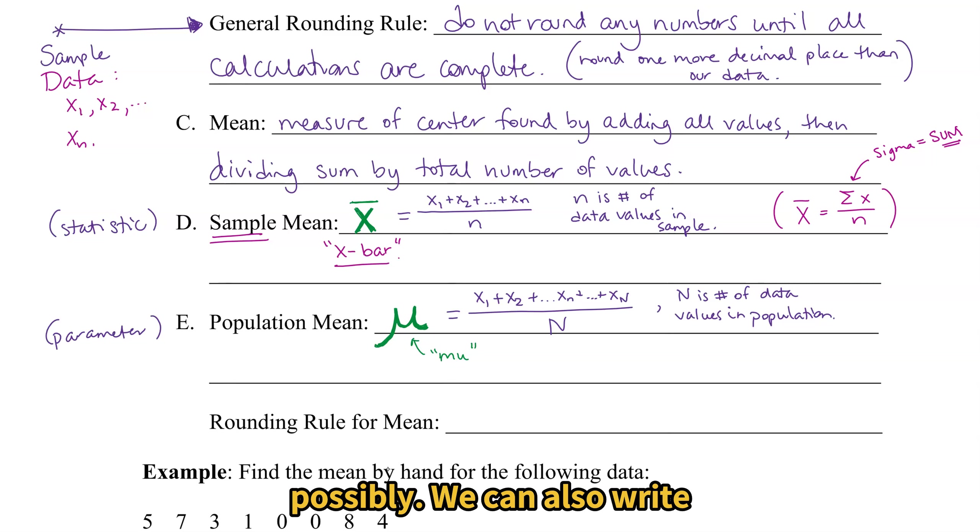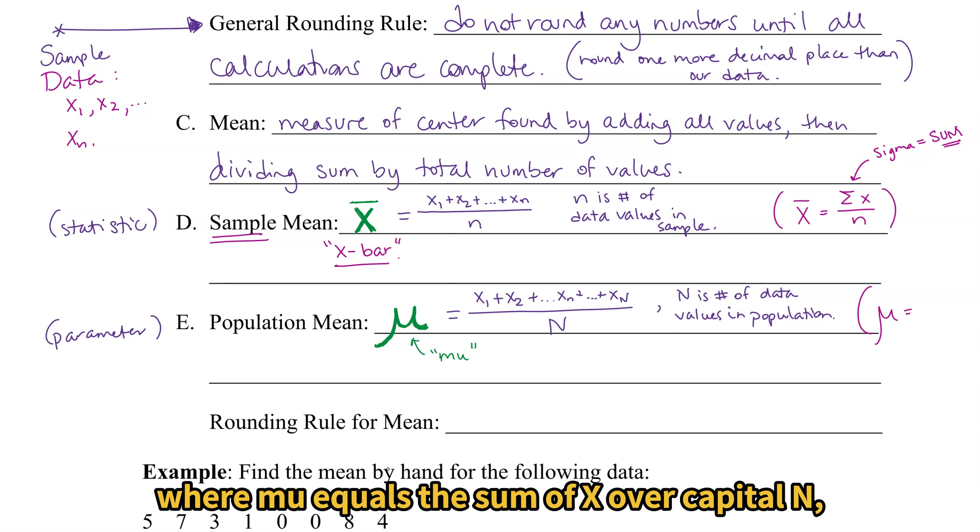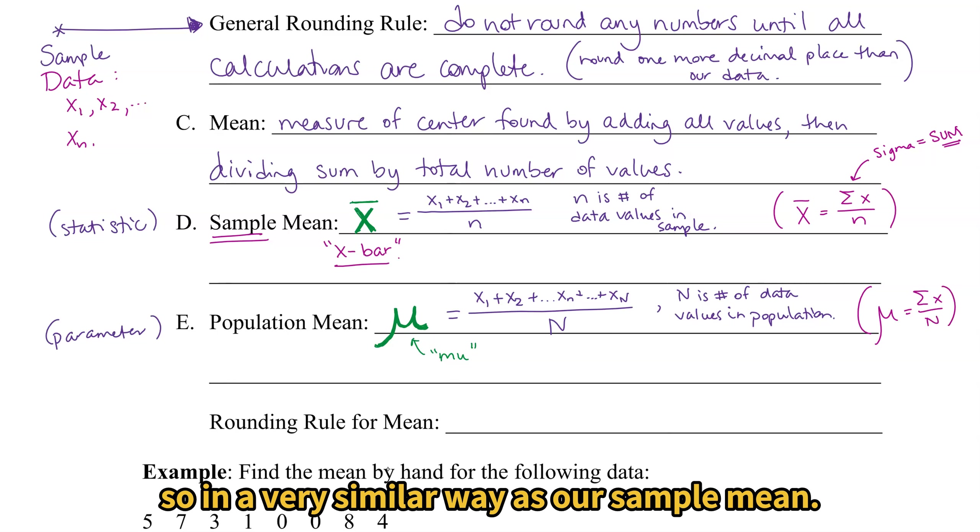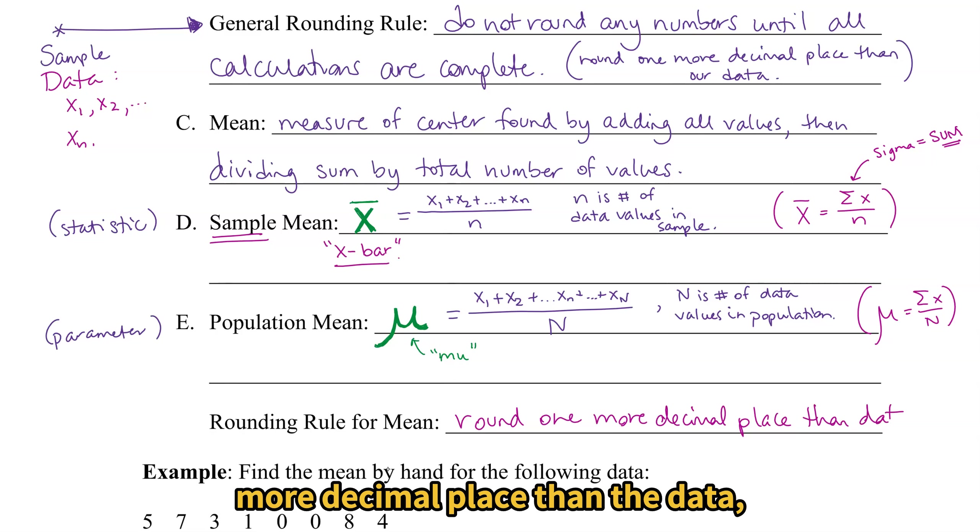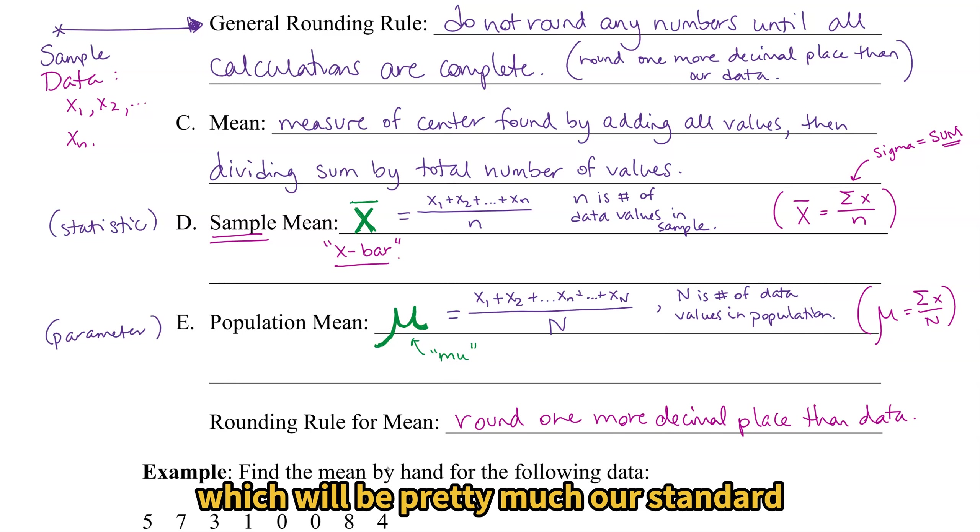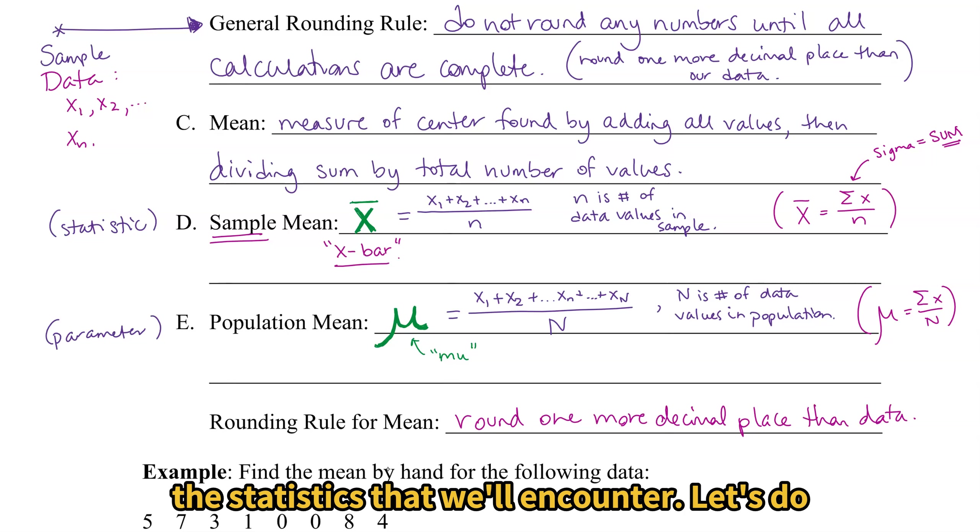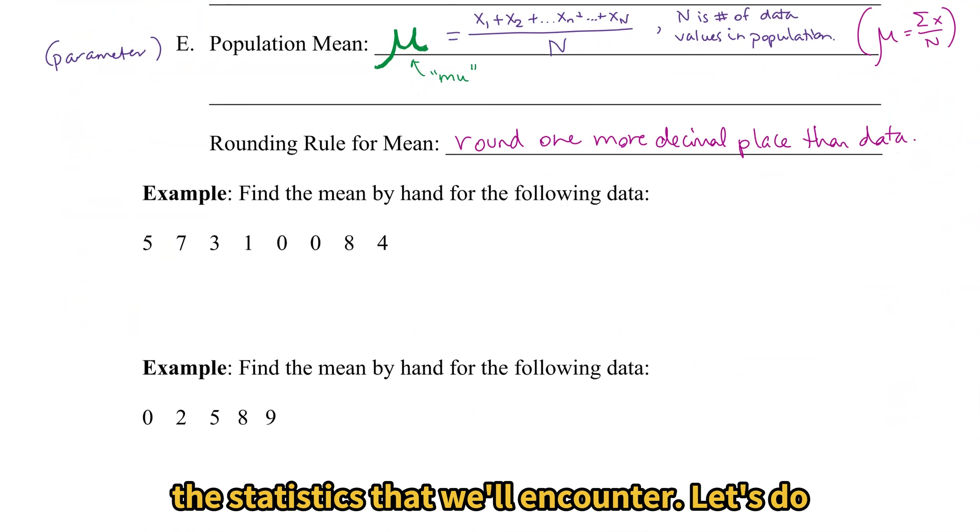We can also write the formula more concisely, much like our sample mean, where mu equals the sum of x over capital N. So in a very similar way as our sample mean. And our rounding rule for mean, we're going to round one more decimal place than the data.